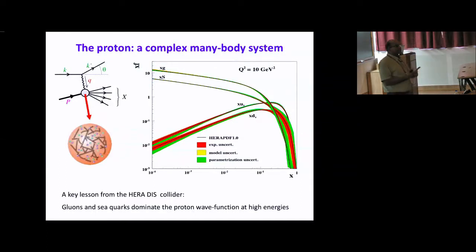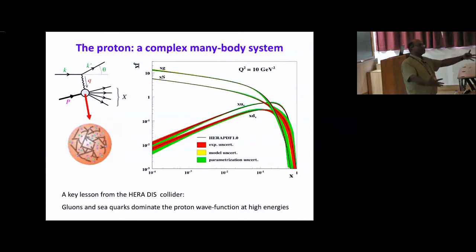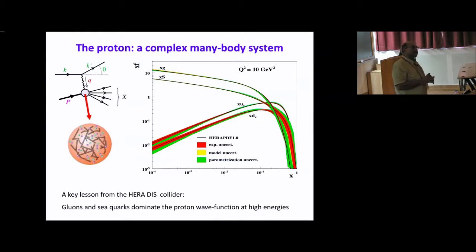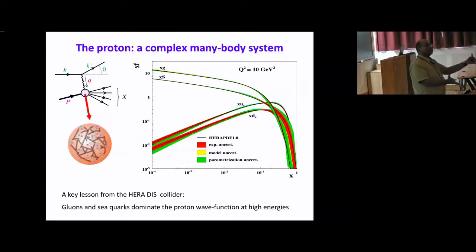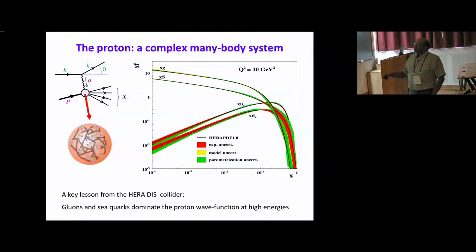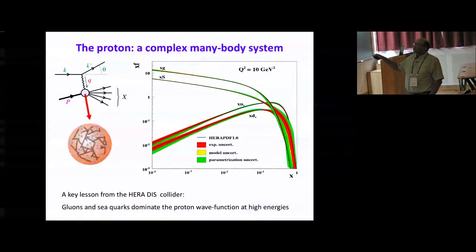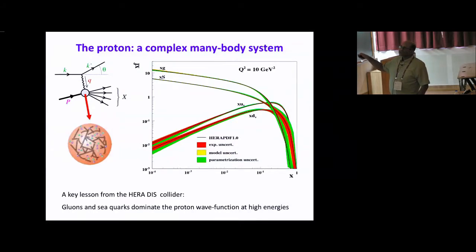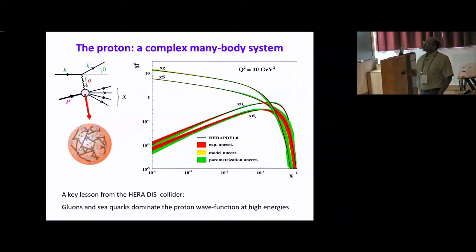You can think of the proton as fluctuating into different configurations with different lifetimes. There are very short-lived configurations containing large numbers of partons. If you have a probe energetic enough to resolve those very short timescales — from the uncertainty principle — then that probe will see the proton as this many-body state. The parton distributions show that at very high energies the gluon distributions are very large and grow rapidly, carried along by sea quark distributions.